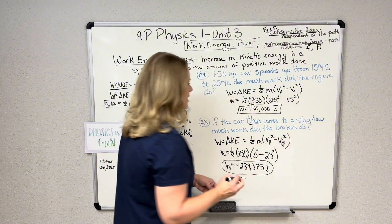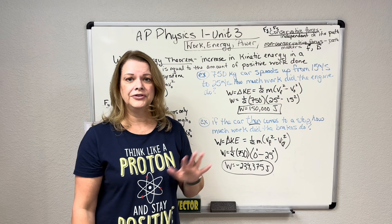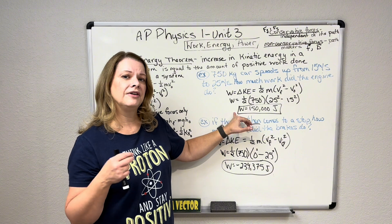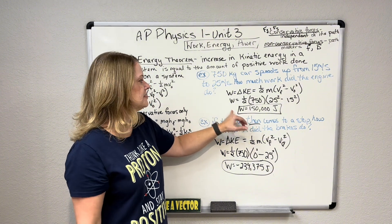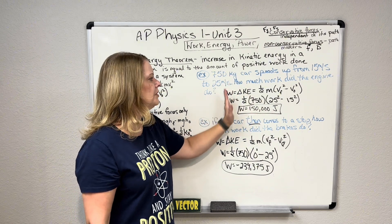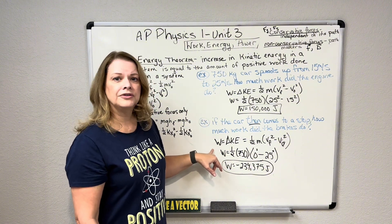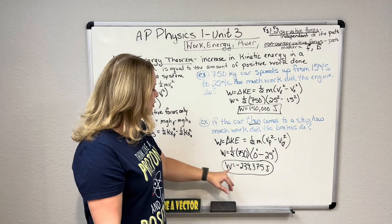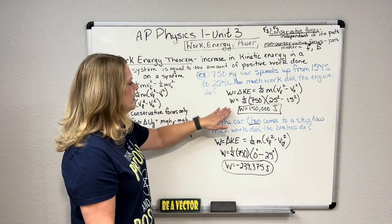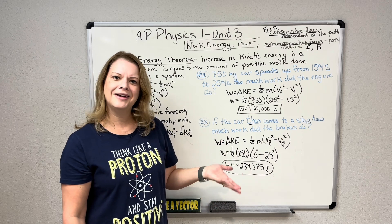Why did work come out negative? It was positive in the first problem and negative here. Remember, work is not a vector — this has nothing to do with direction. Work is positive when a force added energy to the system, which your engine did when you hit the accelerator and increased kinetic energy. But in this case, the brakes did work that took energy out of the system. Work is negative when that force has removed energy from the system — and the car certainly had all its energy removed, because it comes to a complete stop with no kinetic energy left.